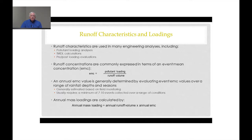Runoff concentrations are commonly expressed in terms of an EMC, which means an event mean concentration. That doesn't necessarily reflect the concentration at any particular time during the event, but it's defined as the total pollutant loading for your parameter of interest generated during the event divided by the runoff volume. When you extend this to an annual EMC value, you are defining the EMC as the annual pollutant loading divided by the annual runoff volume — simply an estimate of the annual loading divided by the annual runoff volume.